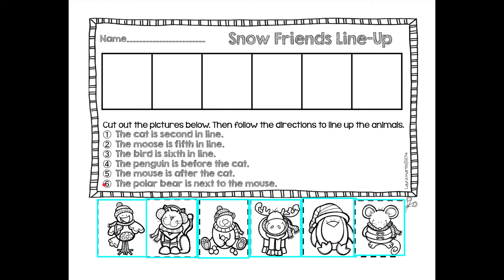I'm sorry — the polar bear is next to the mouse. That's a big deal. A moose and a mouse are two different sizes. So once you have those in their correct spot, they're going to be lined up right and you are finished. Don't forget to turn it in.